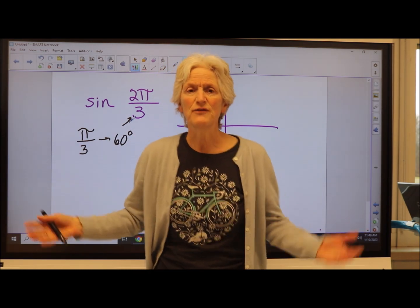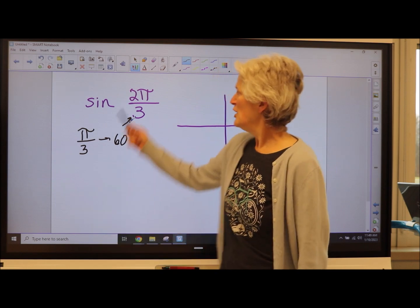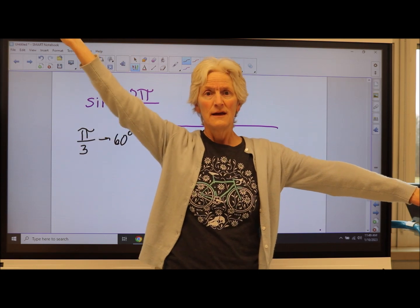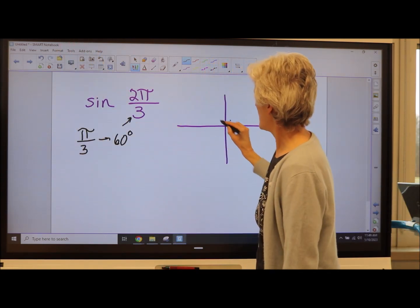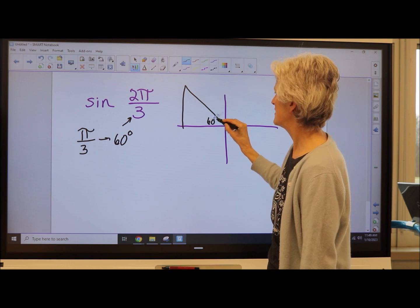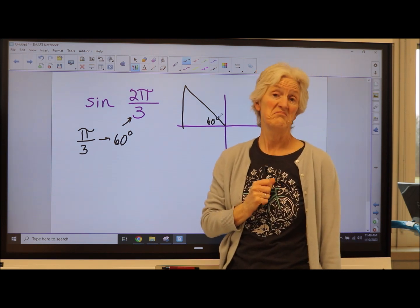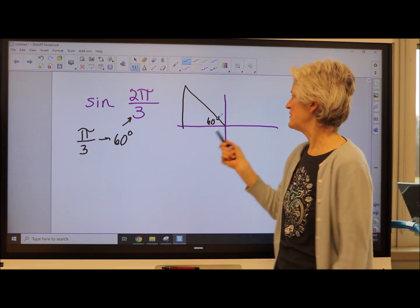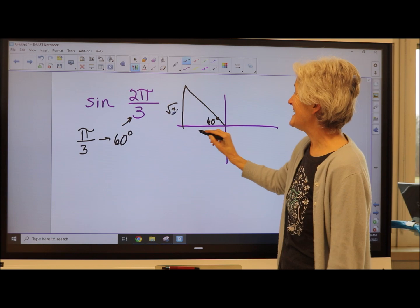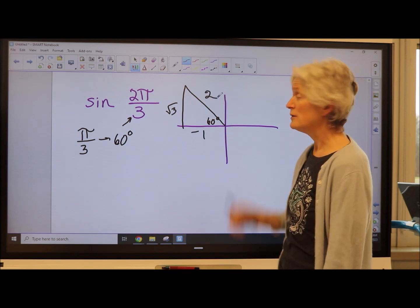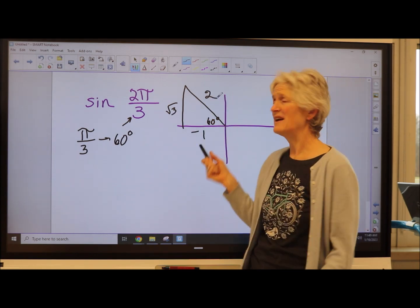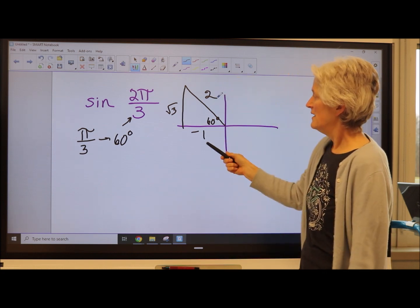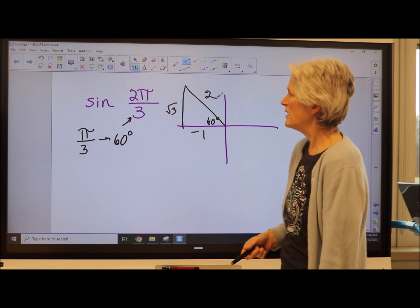So as soon as I see that three in that denominator, I know I have a 60 degree reference angle. Now all I have to figure out is what quadrant I'm in. Two thirds. Well, that's less than one, and it's one third less than one. So I'm in the second quadrant with a 60 degree reference angle. Now I am using degrees there just because 30, 60, 90 I'm used to. I'm going to put a square root of three there, a negative one here, a two.